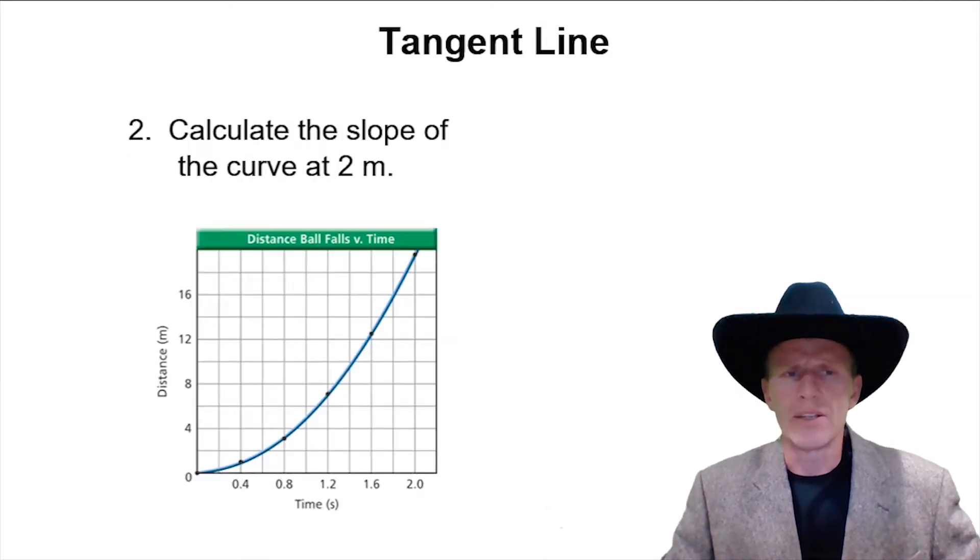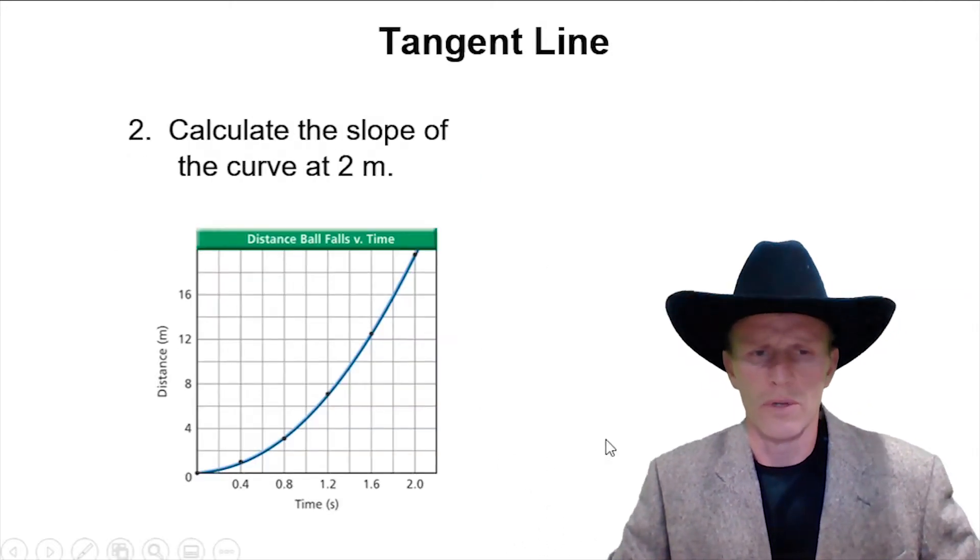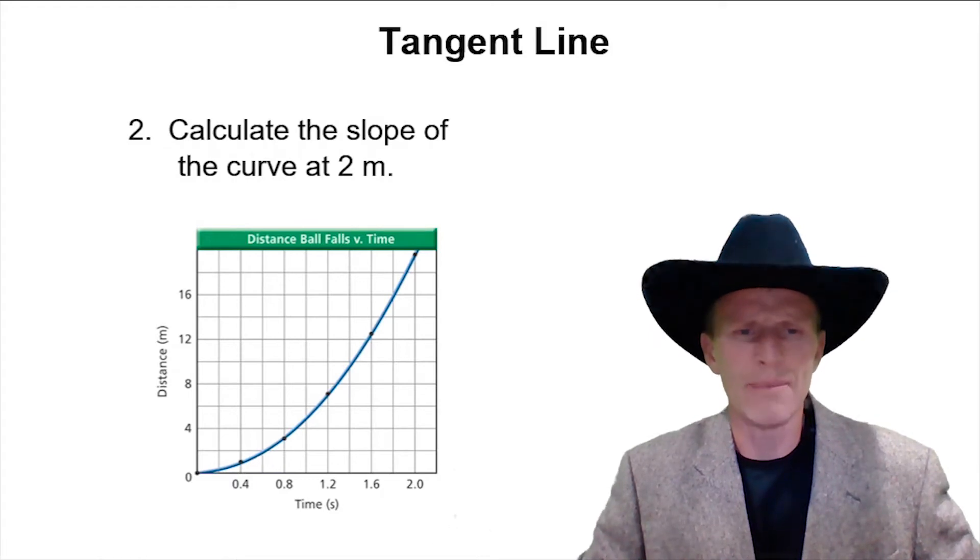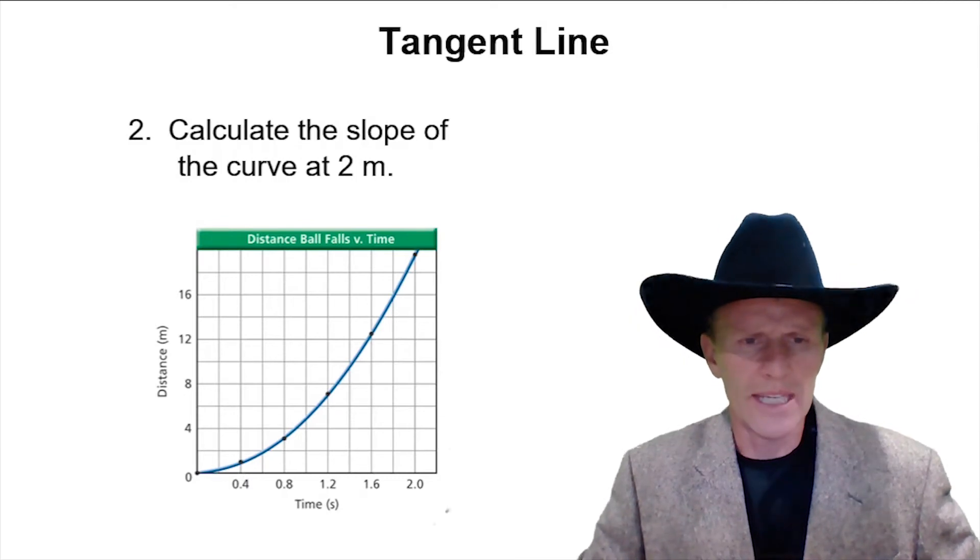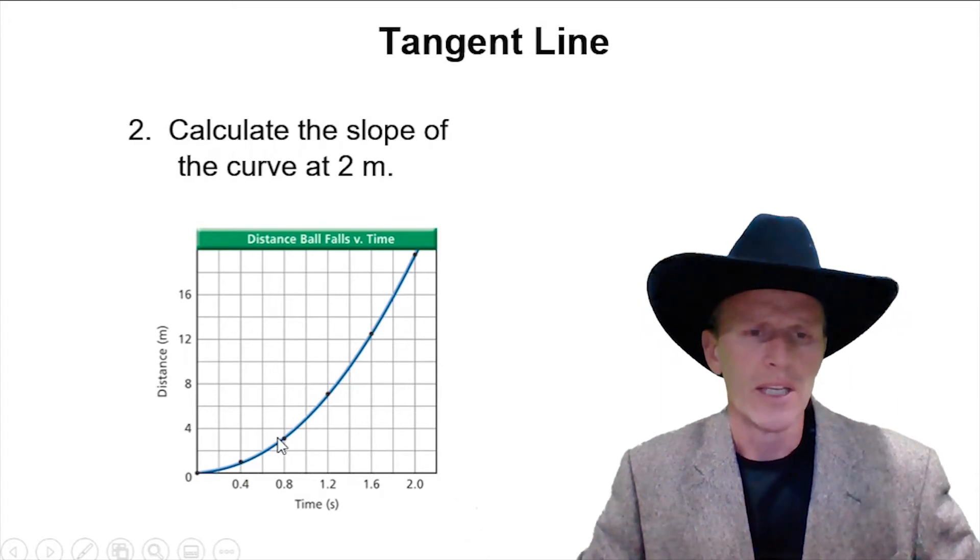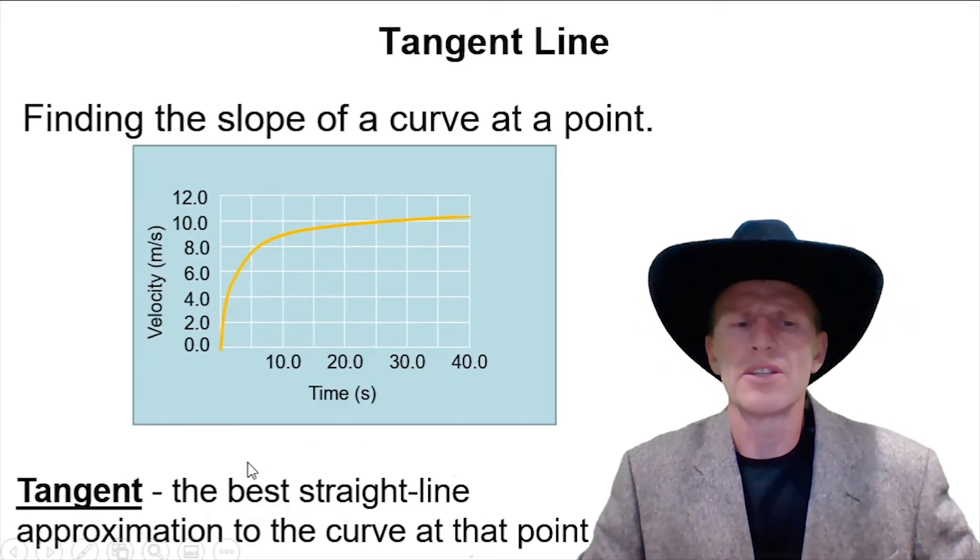So if we were to calculate the slope of the curve at 2 meters, which is between 0 and 4 right here, we'd need to calculate the slope at this point. What does that mean? How does that even work? Well, this line curves, and to get the slope you need two points on a line. We can't take two points on a curve because the slope of this line is changing. So that brings us to the definition of tangent.